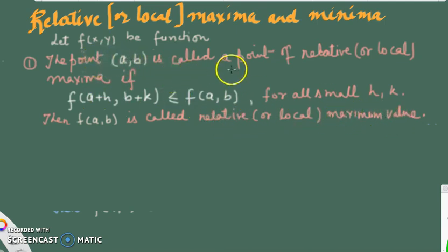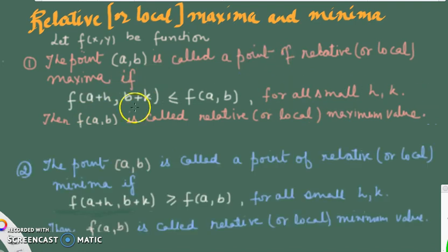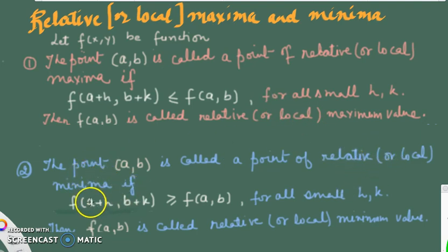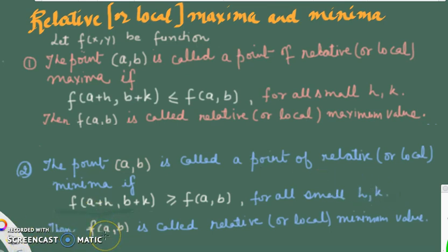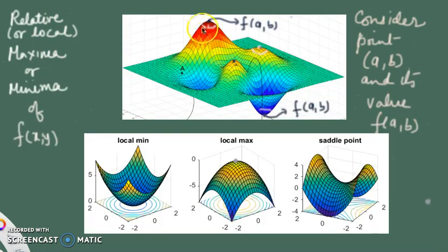The point (a, b) is called the point of relative maxima, and when you substitute into the function, f(a, b) is called the relative maximum value. Similarly, (a, b) is called the point of relative or local minima if all neighboring surrounding points have values greater than or equal to f(a, b) for all small h and k. The value f(a, b) is then called the relative minimum value.